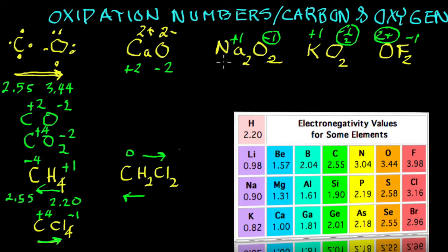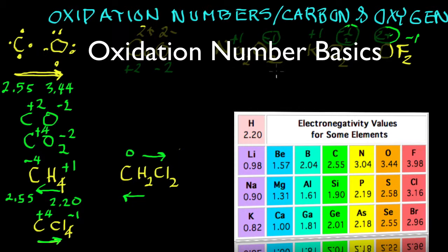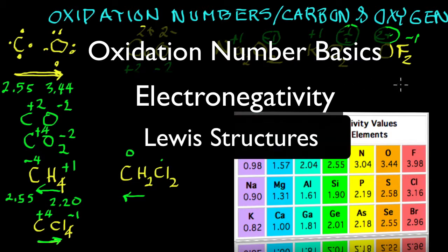So we'll stop right there. And I think it'd be good to, in case you want to review, you may want to go to the tape on oxidation number basics again, or electronegativity, or you could look at Lewis structures. It may help. And we'll stop there.